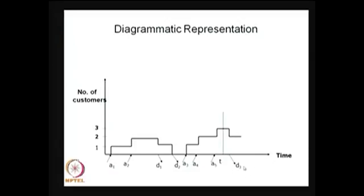Suppose at time a1 the first customer enters the system — the number of customers is incremented by 1. The customer getting service is joined by the next customer at time point a2, so the number of customers in the system becomes 2. At this time point the first customer's service is over and he departs at d1. Now the number of customers in the system is 1. At time t2, the second customer's service also completes, and the number of customers becomes 0.